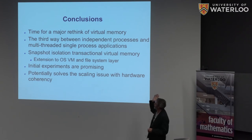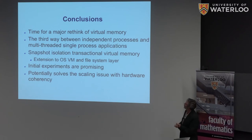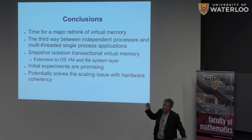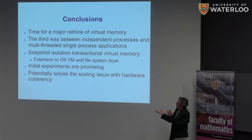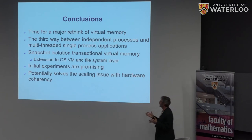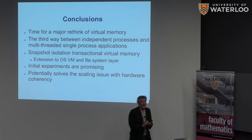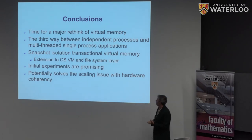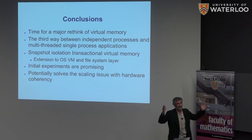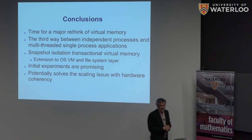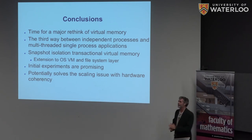To wrap up: going to a snapshot isolation model for transactions significantly changes the way you can run applications. It deals with exactly the problem that scale-up means we can't afford failures, but we'll have them unless we have fault tolerance, and there's sharing going on. Putting these two together solves a significant problem for software, and also for hardware — by saying you don't need this lower-level coherency mechanism which doesn't scale.